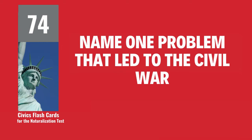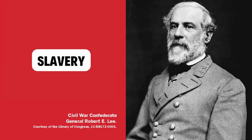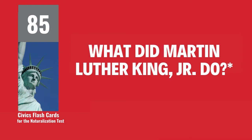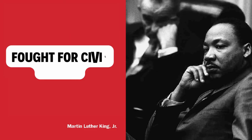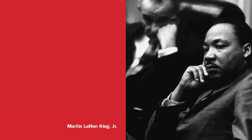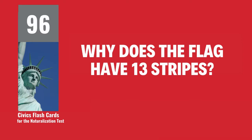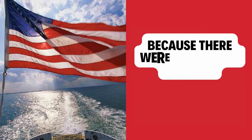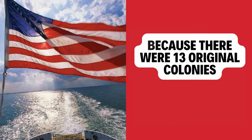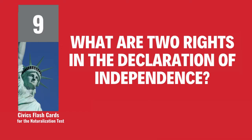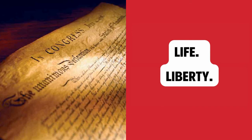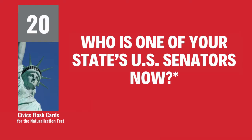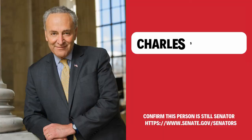Name one problem that led to the Civil War. Slavery. What did Martin Luther King, Jr. do? Fought for civil rights. Why does the flag have 13 stripes? Because there were 13 original colonies. What are two rights in the Declaration of Independence? Life, liberty. Who is one of your state's U.S. senators now? Charles Schumer.